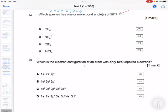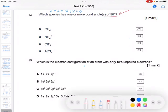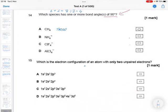Question 14: which species has one or more bond angles of 90 degrees? CH4, hopefully you appreciate that is going to be tetrahedral, which is 109.5 degrees.